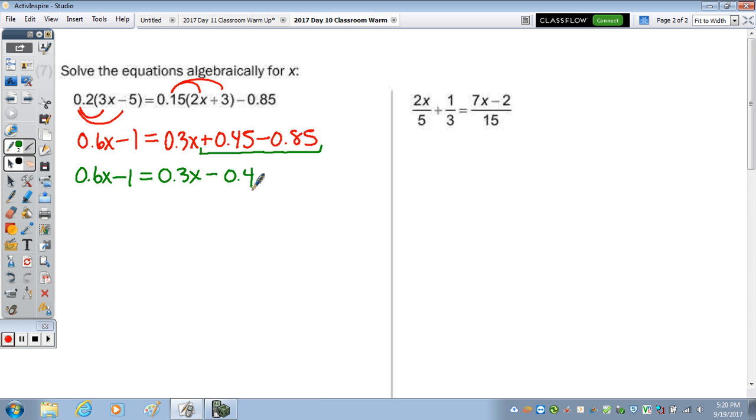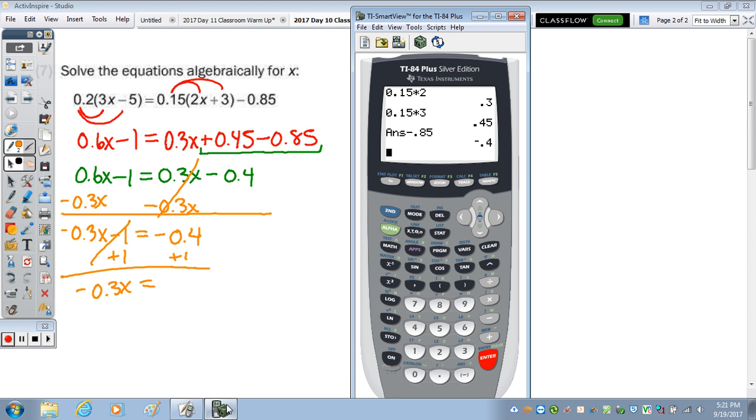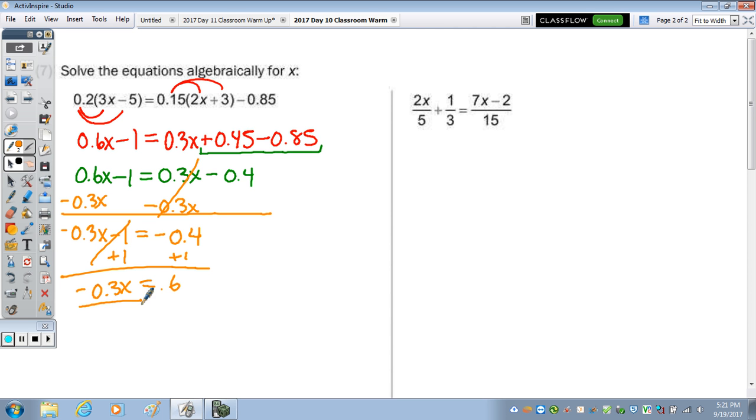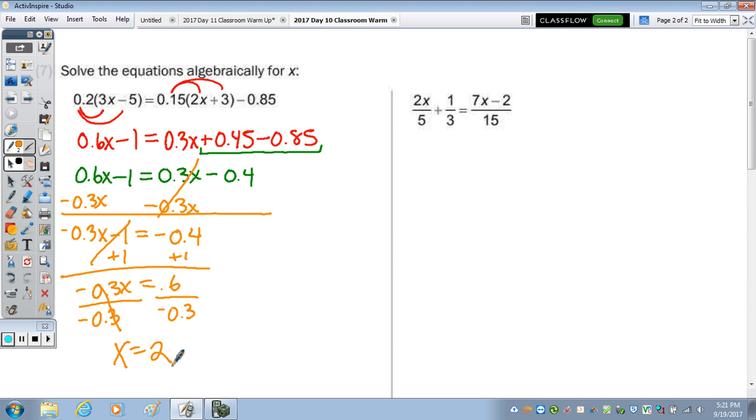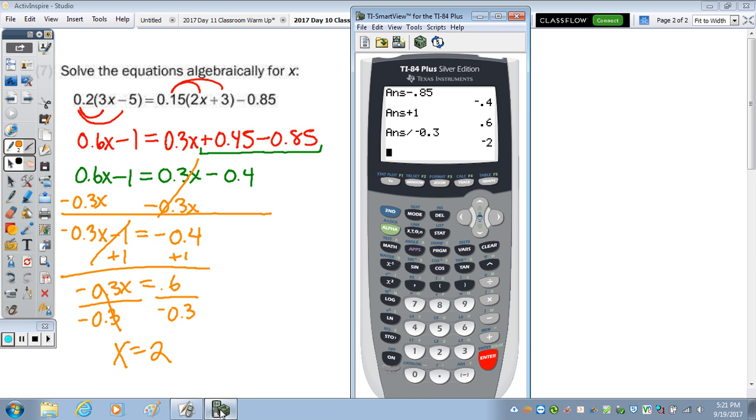We can combine some like terms on the right side. So we have 0.6X minus 1 equals 0.3X. Now the 0.45 minus 0.85 is a negative 0.4. So I'm going to do 0.4. Now I'm going to combine like terms. I'm going to subtract the smaller number of X's from the larger. And I end up with negative 0.3X minus 1 equals, those are cancelled, negative 0.4. So when we add the 1, we have negative 0.3X equals, so there's the negative 0.4 in there. I'm going to hit plus 1. And we have 0.6. Divide by negative 0.3. Divide by negative 0.3. And we get a final answer of a positive 2. Or, I'm sorry, negative or positive is a negative 2.